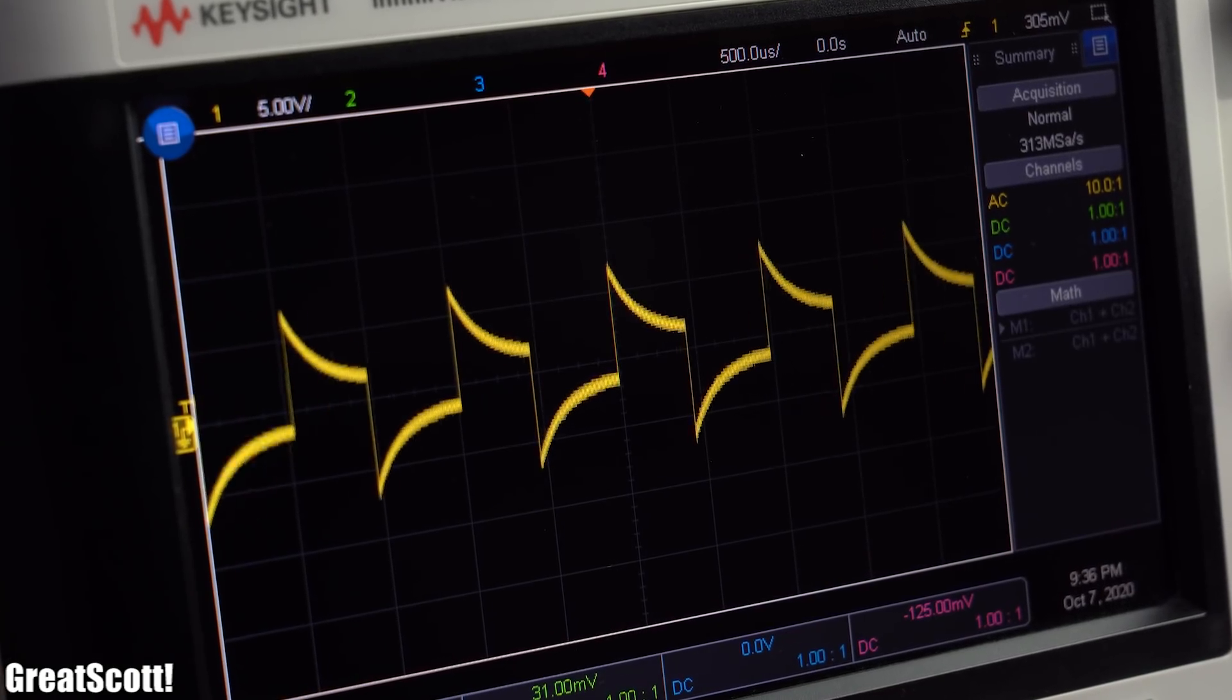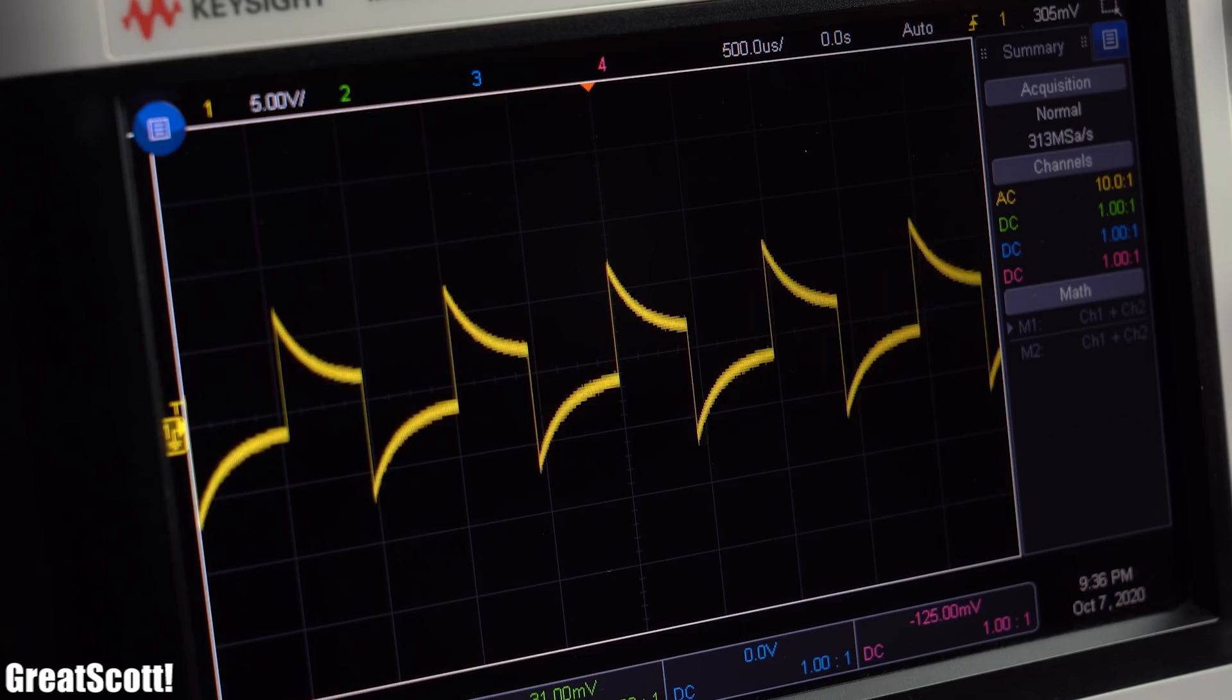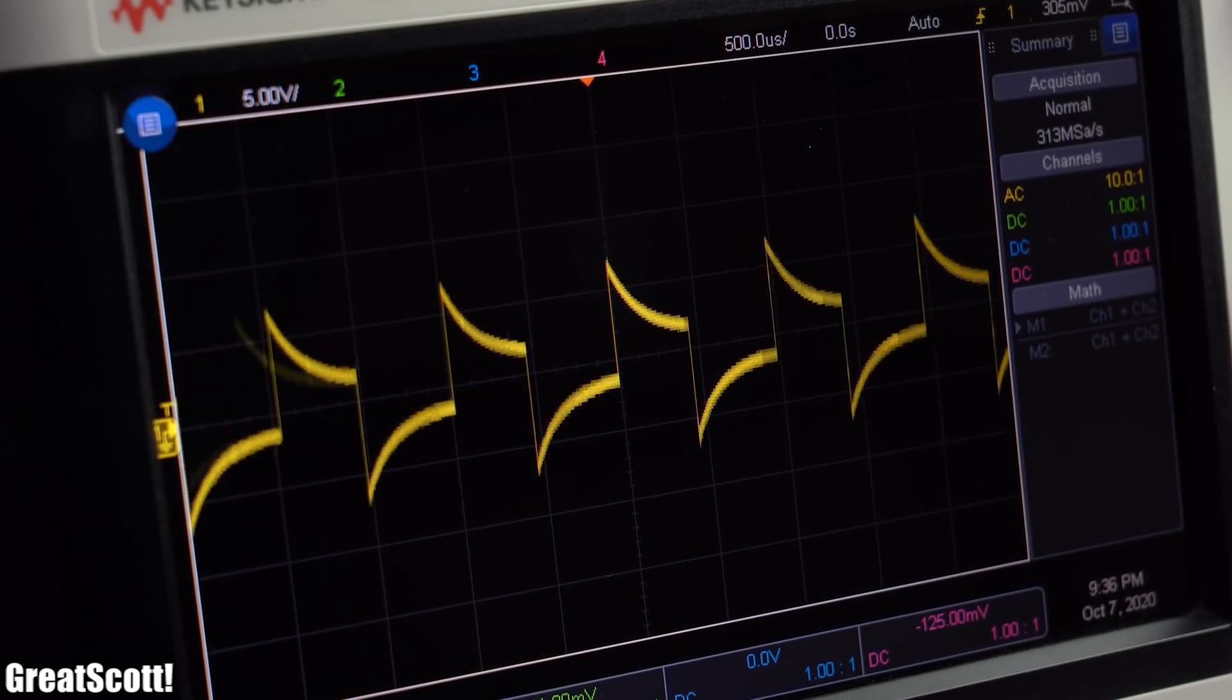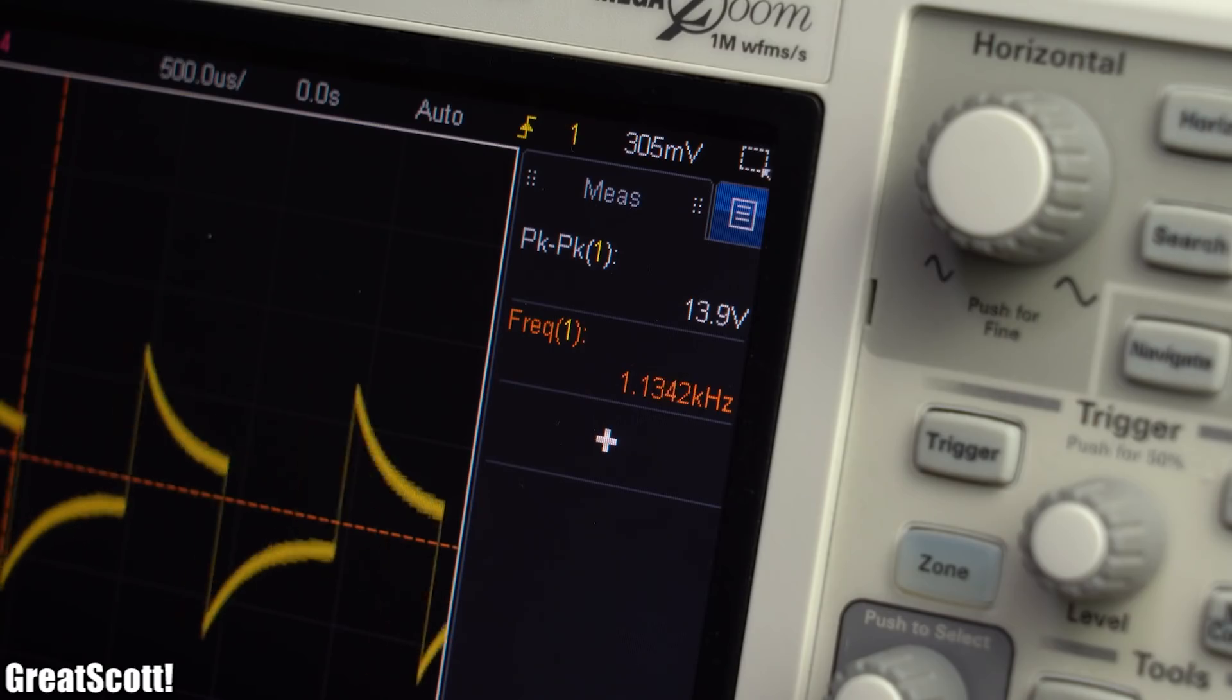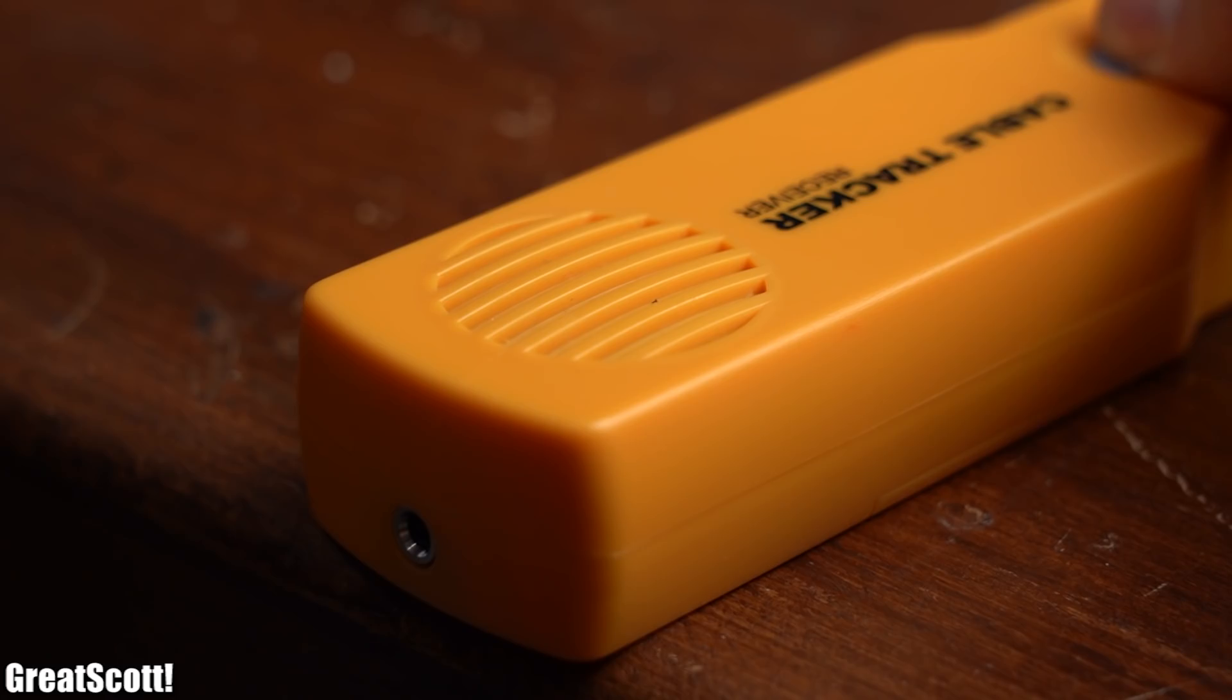To dig deeper though, we can firstly hook up the sender to the oscilloscope to see the waveform for ourselves. As you can see, it resembles a square wave but with big voltage peaks at the edges, and its frequency also seems to vary over time between values of around 1kHz to 1.14kHz, which explains the changing tone the receiver plays back.